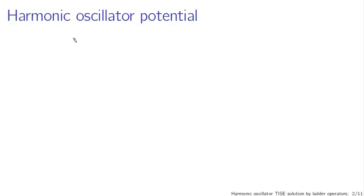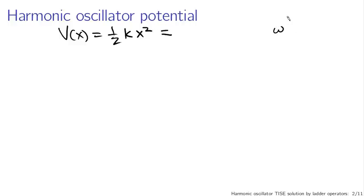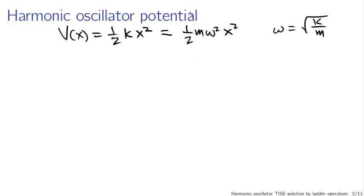Just to set the stage, the potential that we're working with here is the potential of a harmonic oscillator — essentially the energy you get if you displace a particle attached to a spring from equilibrium. The potential as a function of x is one-half the spring constant times the displacement x squared. It's traditional to write this in terms of the angular frequency ω, which equals the square root of the spring constant divided by the mass. Substituting in, you end up with one-half m ω² x², and this is the form of the potential we'll be using.